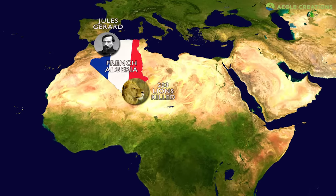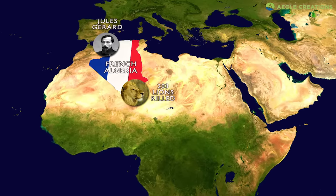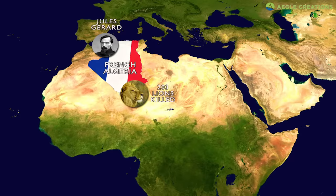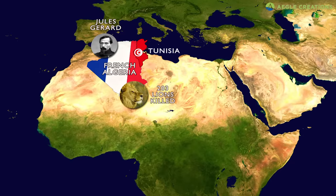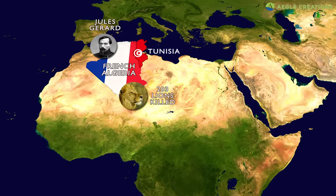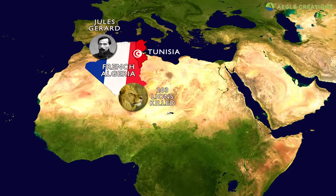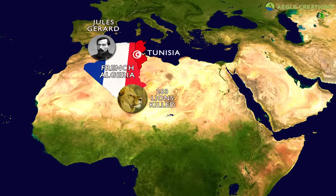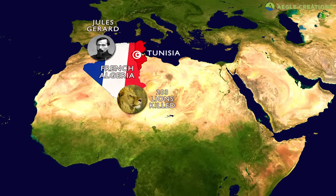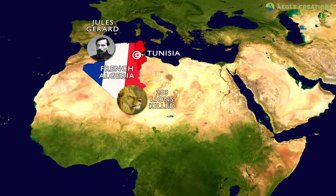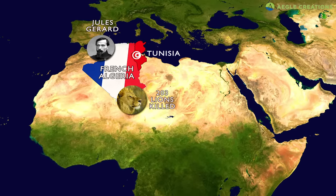By the end of the 19th century, lions had virtually become extinct in Algeria and Tunisia. Around the 1920s, scientists assumed that Barbary lions were extinct.